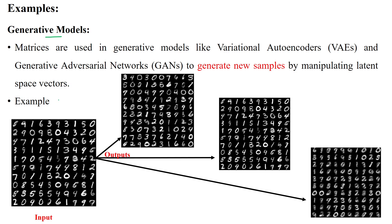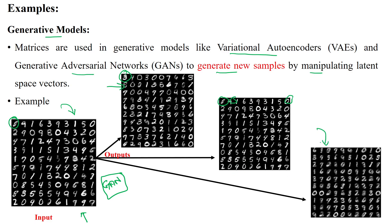In generative models, matrices are very useful to represent images using rows and columns. We use variational autoencoders and generative adversarial networks (GANs) to generate new samples by manipulating latent space vectors. The input is sent into the GAN model or autoencoders, which generate different images by producing different combinations of values to increase the number of images in the output.